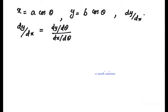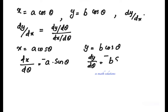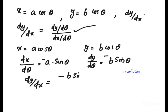Since this is in the form of a parametric equation, dy by dx equals dy by d theta divided by dx by d theta. So separately we need to find dy by d theta and dx by d theta. x is equal to a cos theta, so dx by d theta is equal to a times minus sin theta. Then y is equal to b cos theta, so dy by d theta is equal to minus b sin theta. Now dy by dx equals dy by d theta divided by dx by d theta.